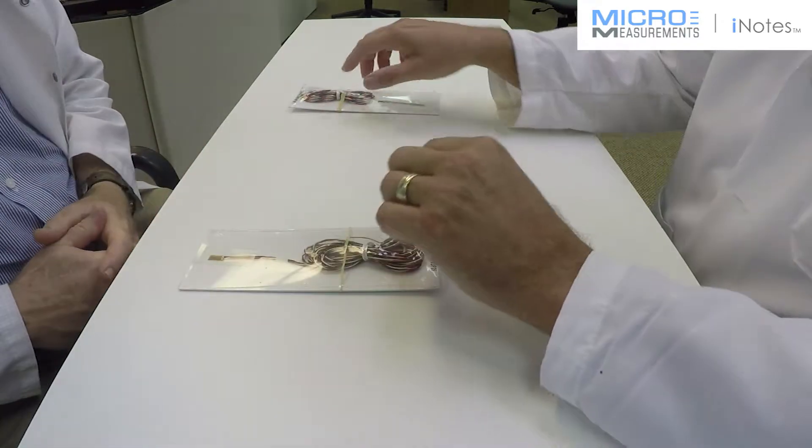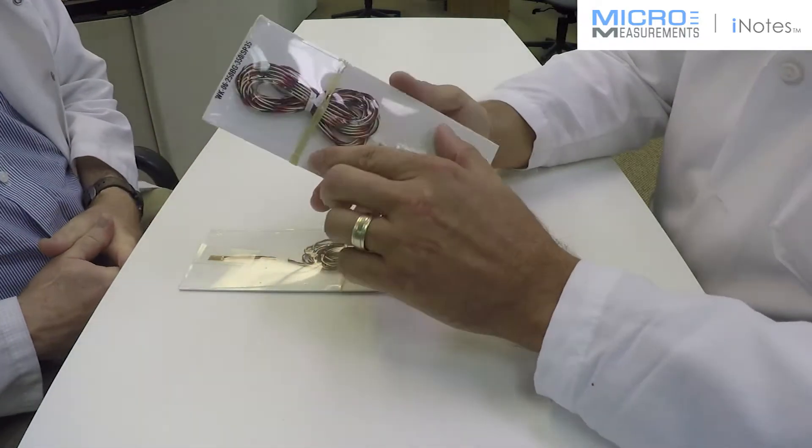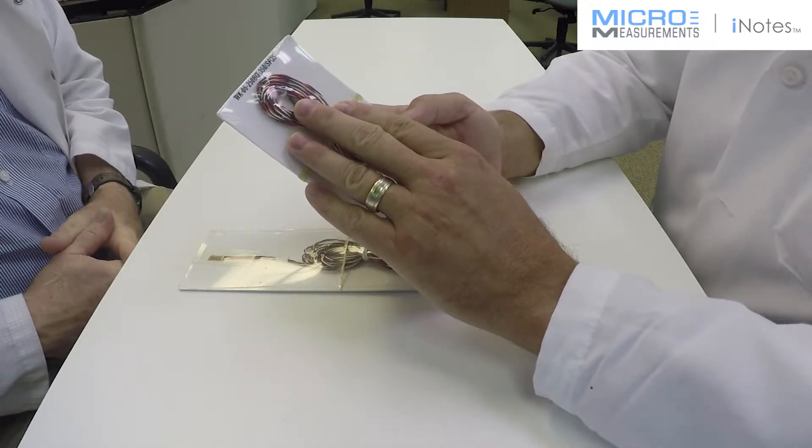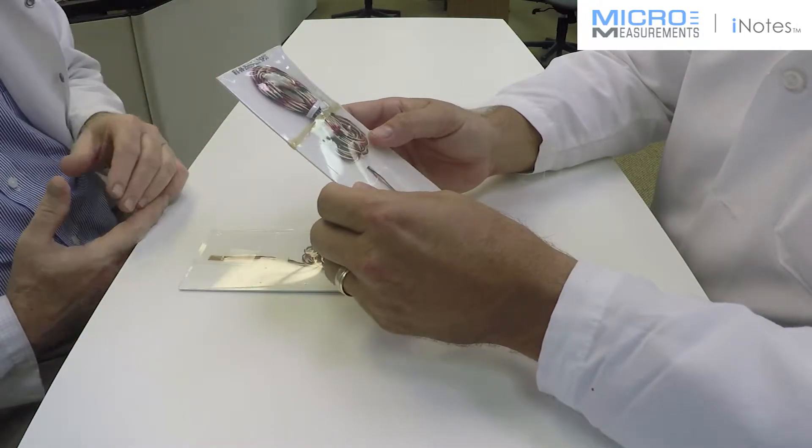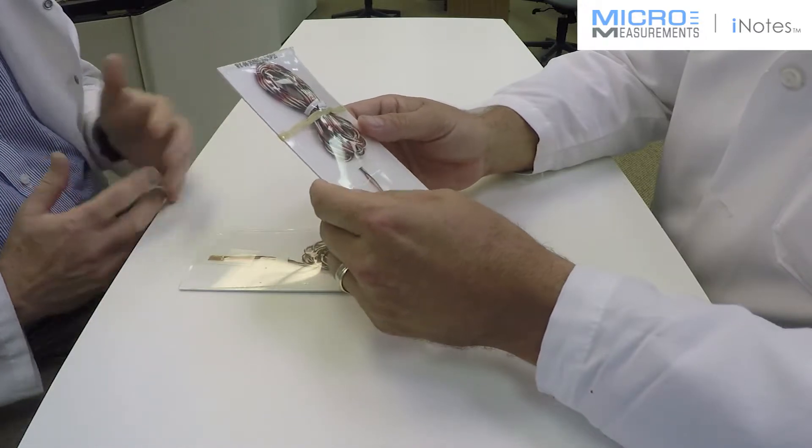But we can also put the SP35 on the WK series gauges. So is the WK series gauge with the SP35 rated to a higher temperature? Exactly, exactly.